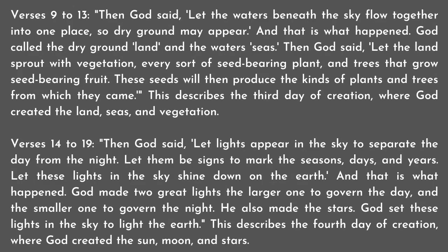Verses 9 to 13: Then God said, Let the waters beneath the sky flow together into one place, so dry ground may appear. And that is what happened. God called the dry ground land and the water seas. Then God said, Let the land sprout with vegetation, every sort of seed-bearing plant, and trees that grow seed-bearing fruit. These seeds will then produce the kinds of plants and trees from which they came.